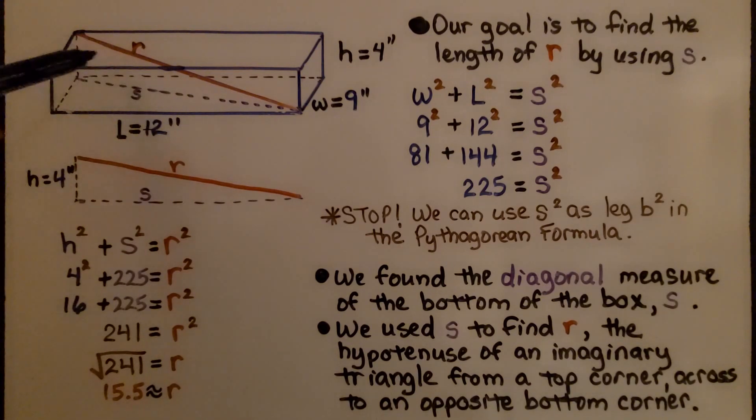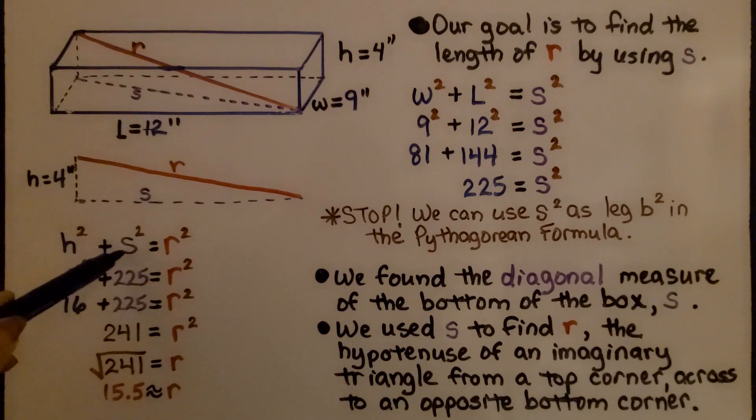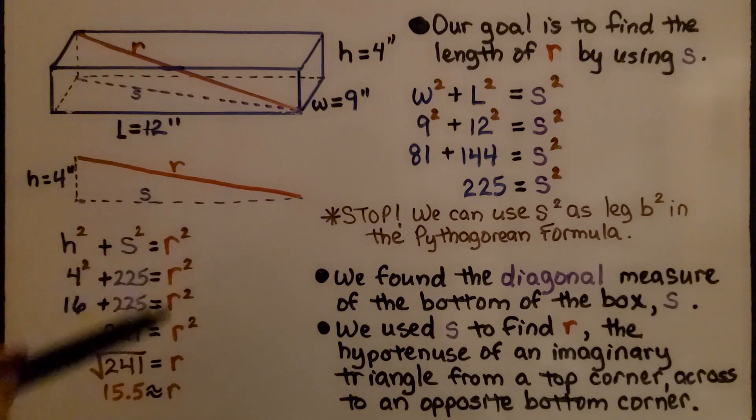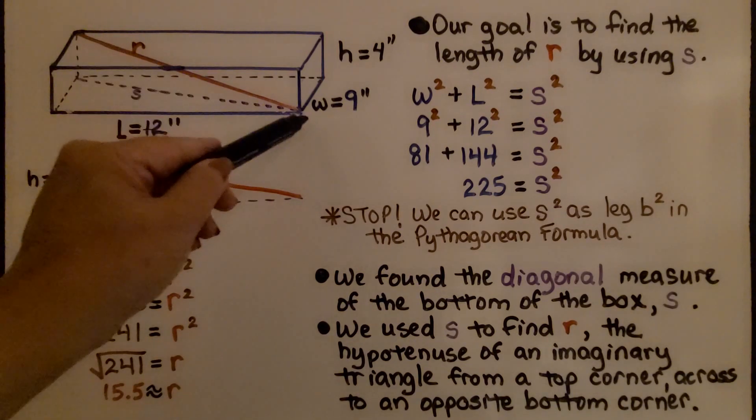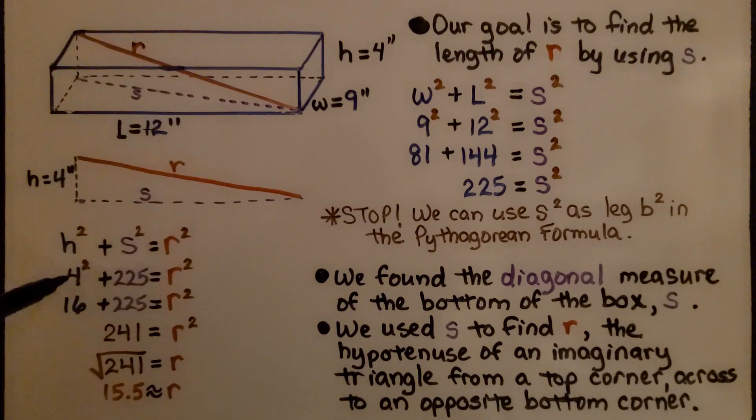We're going to use s as one of the legs and we're going to use this 4 inch height as one of the legs. So we have height squared plus s squared is equal to r squared. R is our hypotenuse. And the height is 4 inches so we have 4 squared which is 16. We know s squared is 225 so now we can just put that in there. We know it's equal to r squared. We add 16 plus 225 and that's 241.